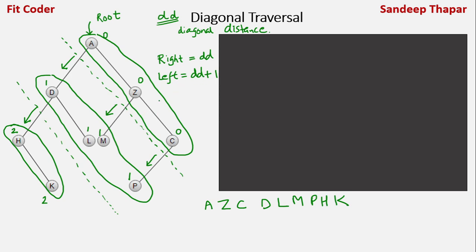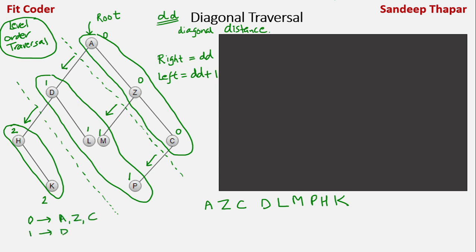We'll use this property and do a level order traversal of the tree. While doing the level order traversal, we'll store the diagonal distance of each node in a map. The nodes with diagonal distance 0 are A, Z, and C. Diagonal distance 1 contains nodes D, L, M, and P. For distance 2 it is H and K. Once the map is filled, we print the contents in increasing order of the key, giving us the diagonal traversal.